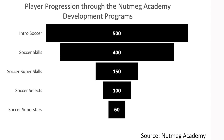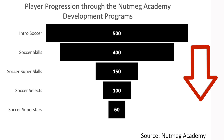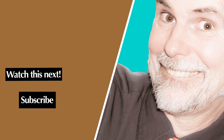In summary, a funnel chart is an effective way to illustrate the different stages of a process and the rate of progression through each stage. Thanks for your time and I look forward to discussing another way to visualize data so that you can make your point.